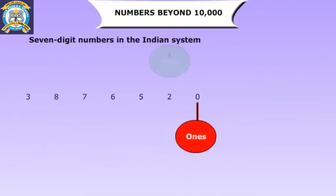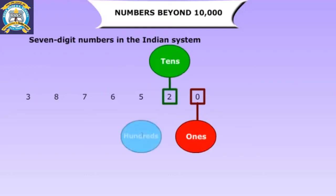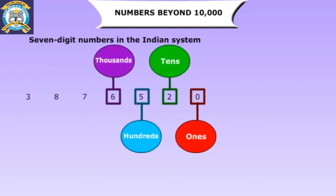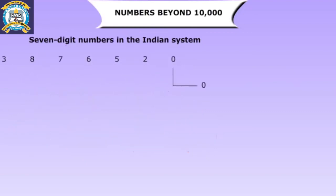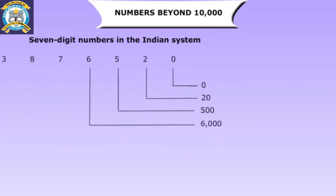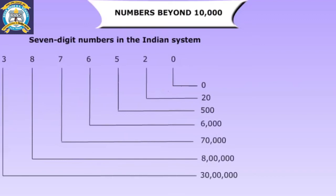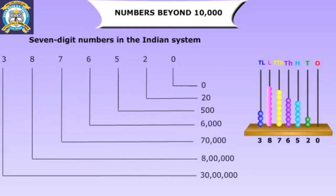Seven-digit numbers in the Indian system. The place values are ones, tens, hundreds, thousands, ten thousands, lakhs, and ten lakhs. For example: zero ones, two tens, five hundreds, six thousands, seventy thousand, eight lakh, thirty lakh. The number is represented on the abacus as shown.